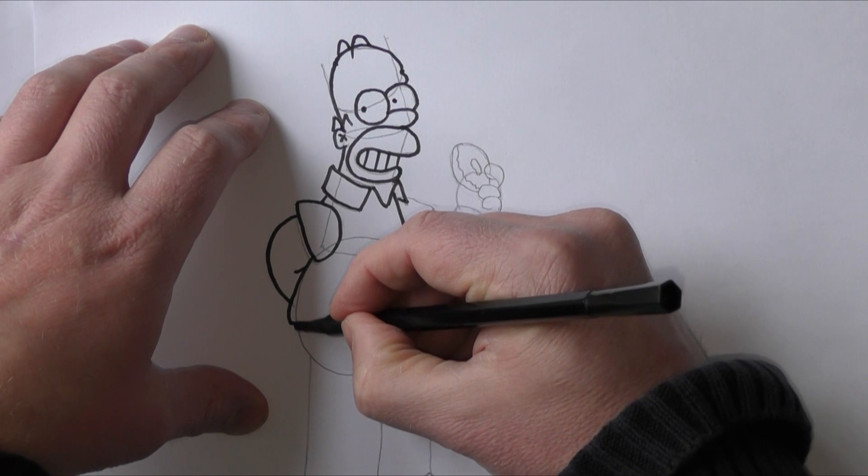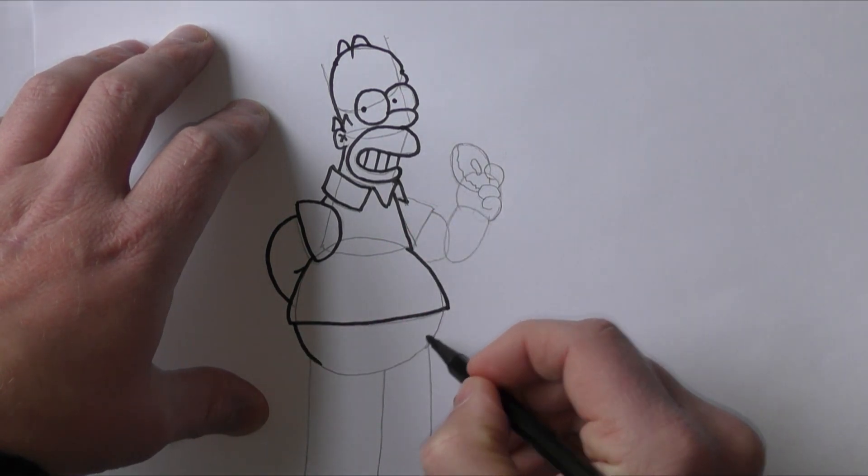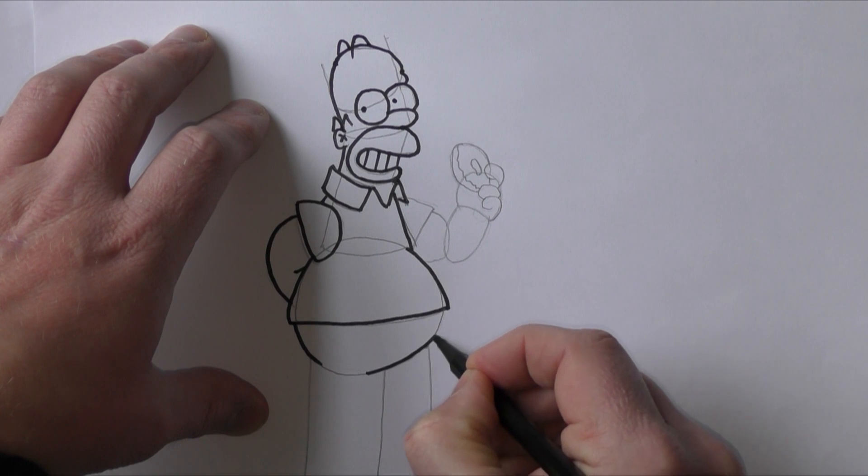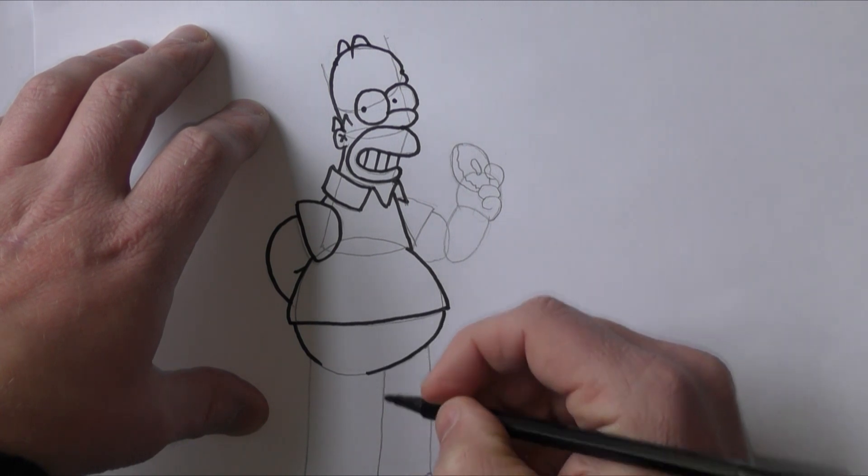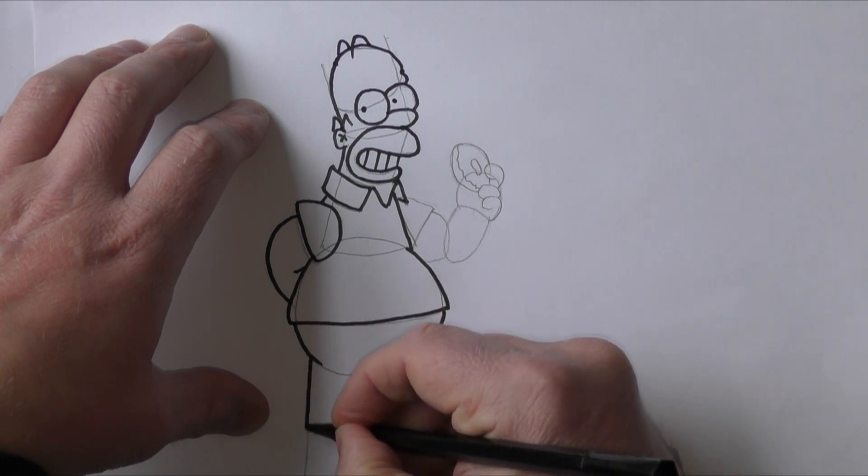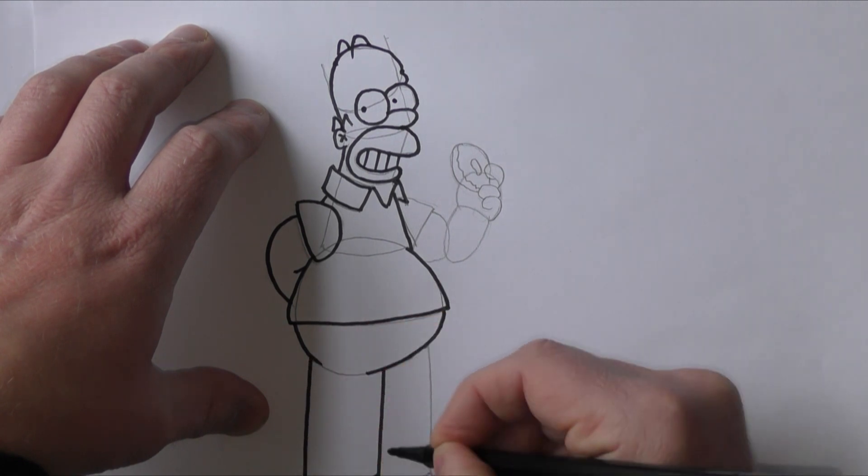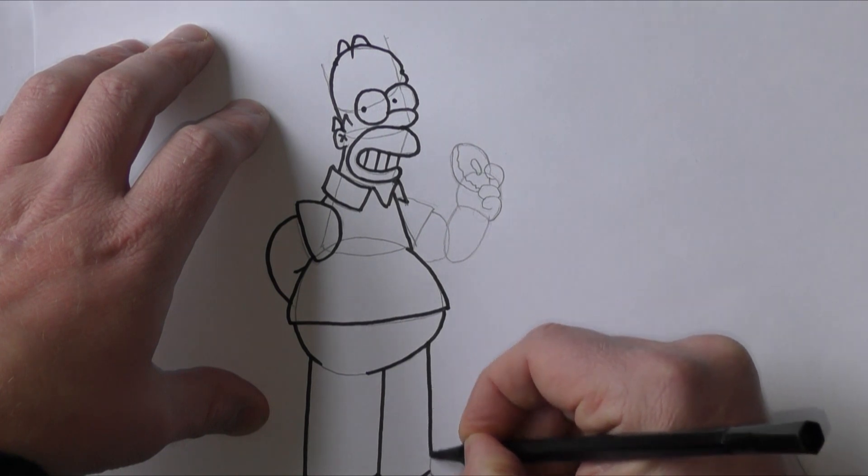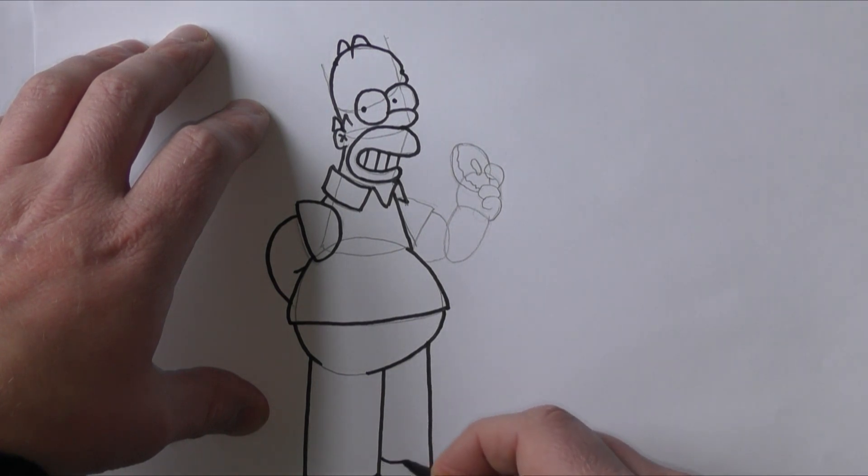Now let's do his trousers. So we'll just fill those in. With this one just follow the lines and it's absolutely fine. And down his legs and around to the bottom. And put a bit of detail on the bottom of his trousers.